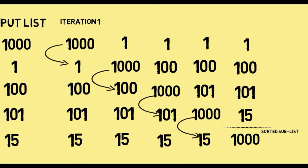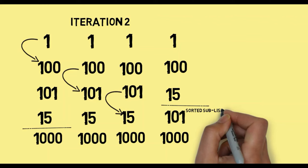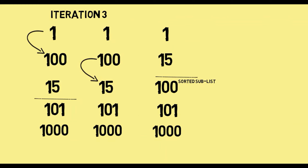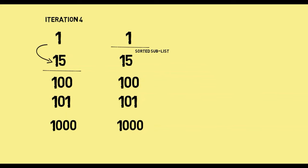Just to quickly recap: at the end of iteration 1, 1000 bubbled to its correct position. At the end of the second iteration, 101 bubbled to its correct position, which is the second last position. At the end of the third iteration, 3 numbers acquired their correct position. And at the end of the fourth and last iteration, 4 numbers got their correct position. The fifth number — out of n numbers, n-1 numbers are sorted, and the nth number is correctly sorted as well. So we have the final sorted list.